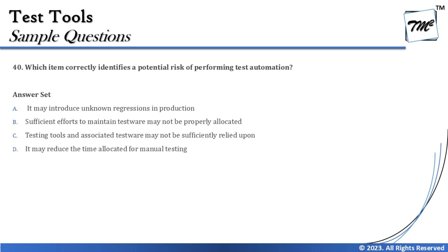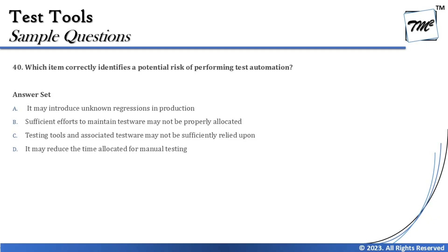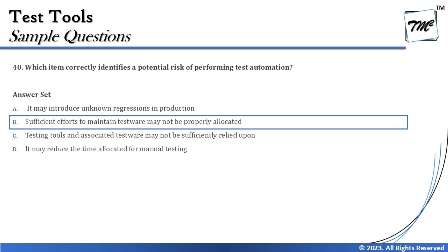Option D says it may reduce the time allocated for manual testing — but that's actually a benefit of automation testing, not a risk. So we can rule out option D easily. Putting it all together, the correct answer is B: sufficient efforts to maintain testware may not be properly allocated — if that doesn't happen after procuring the tool, it certainly results in a risk.